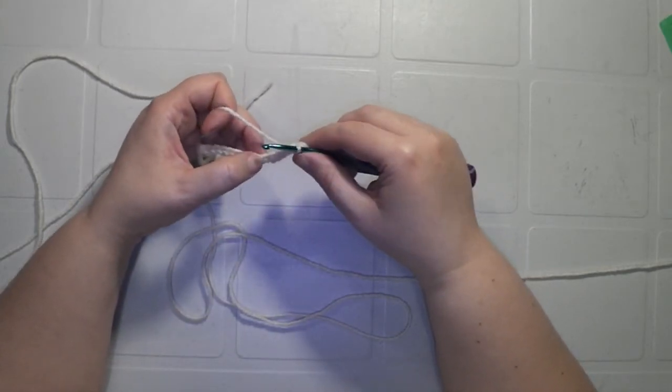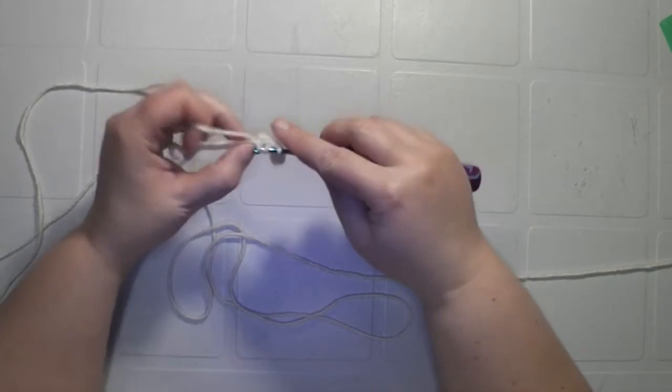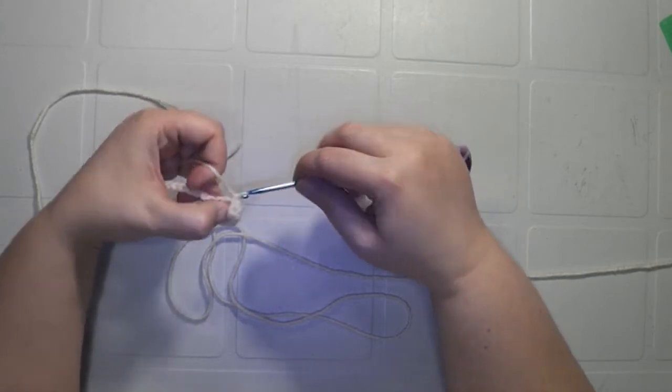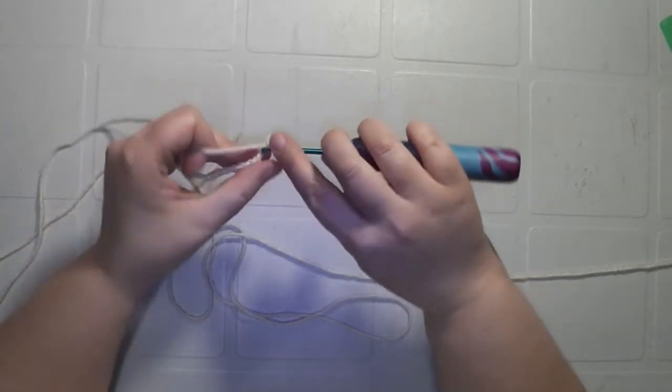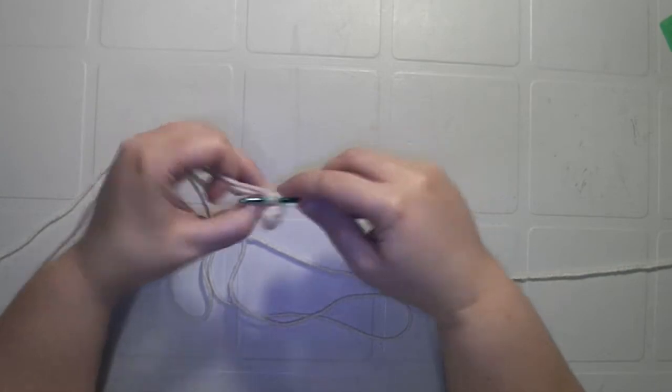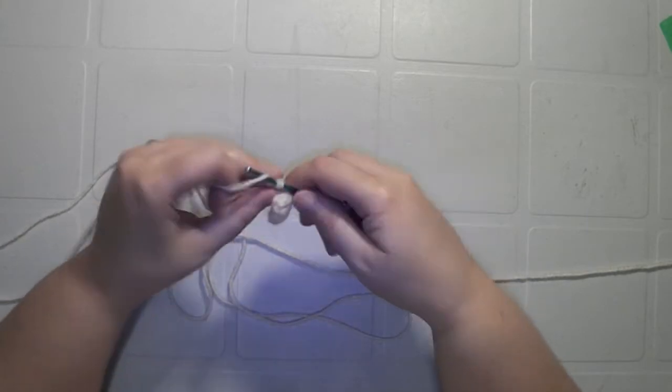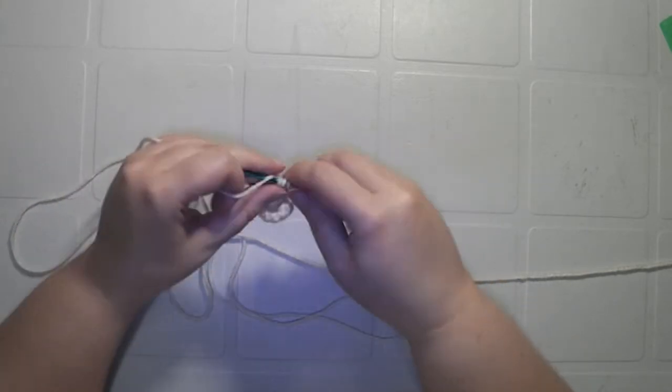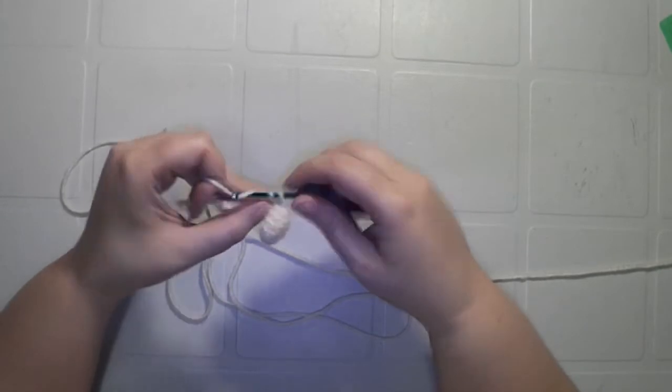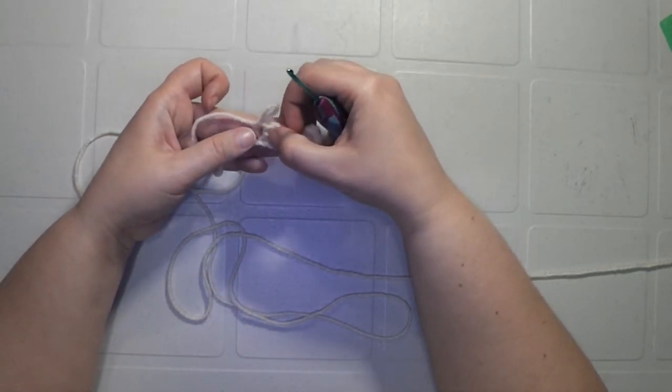So what we're going to be doing now is six double crochets, one in each of the next six stitches. One, it's a little hard to see this one because it wants to curl up on you. But so we've done one, two, three, four, five, and six.